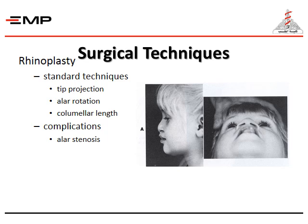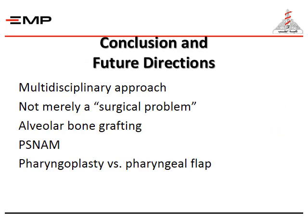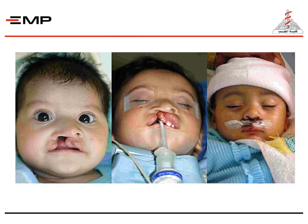At a further older age, rhinoplasty is performed using standard techniques to achieve tip projection, alar rotation, and columellar length. Complications include alar stenosis. In conclusion, cleft lip and palate requires a multidisciplinary team approach — it is not merely a surgical problem. Alveolar bone grafting and pre-surgical nasal alveolar molding are needed. Pharyngoplasty versus pharyngeal flap may also be required. Here is a case of complete cleft lip shown pre-operative and post-operative.